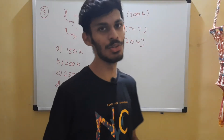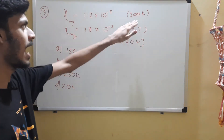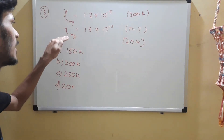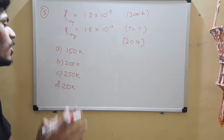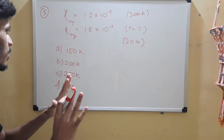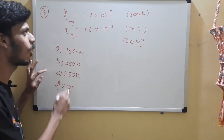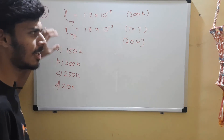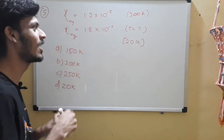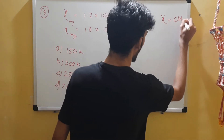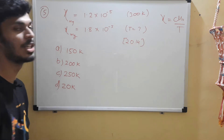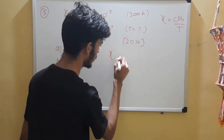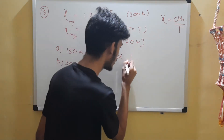Question 5: the susceptibility of magnesium at 300 K is 1.2 × 10⁻⁵. Find the temperature at which susceptibility increases to 1.8 × 10⁻⁵. All options are less than 300 K, which is obvious — to increase susceptibility you decrease temperature. Curie's law: χ = Cμ₀/T, so susceptibility and temperature are inversely proportional.